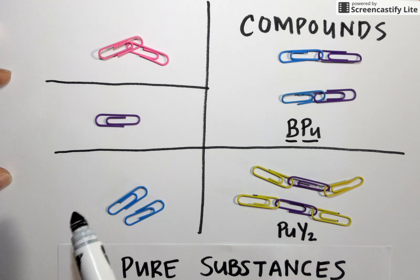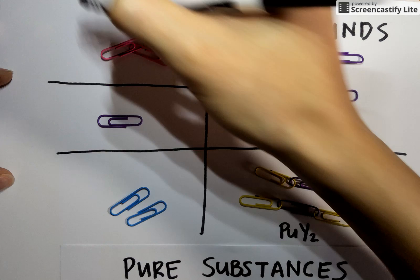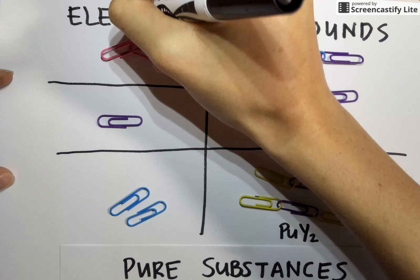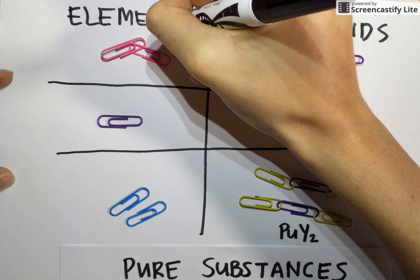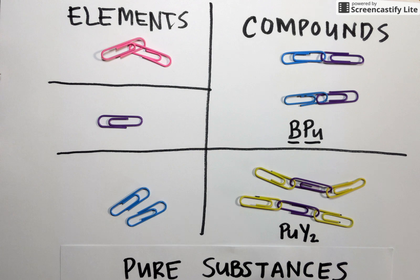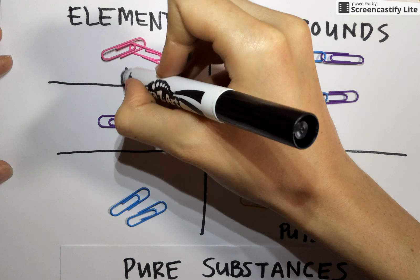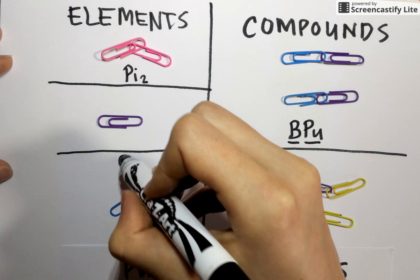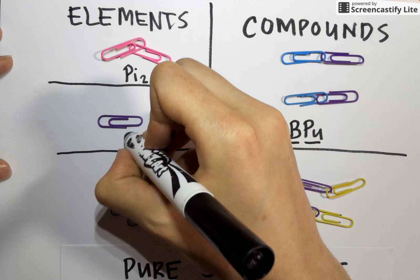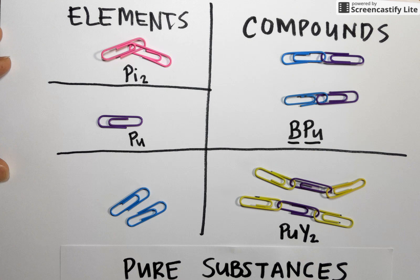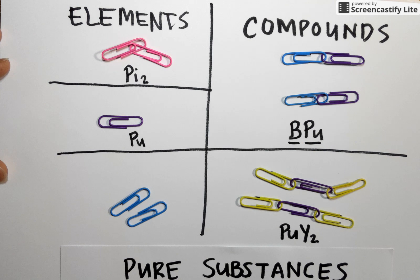Over on this side, where things seem to be a little bit simpler, we have elements. Elements are characterized by being made up of the same type of atom. So in this case, even though we have a chemical bond, we only have one type of atom. The same goes here. It's just an individual atom. We should be able to find these symbols on the periodic table, where these actual elements.